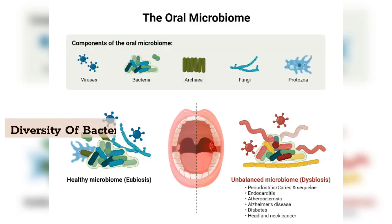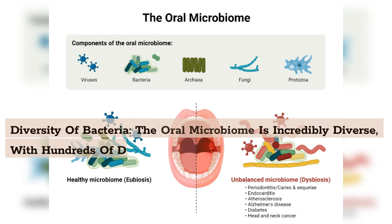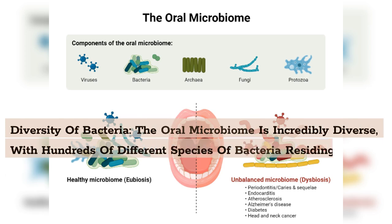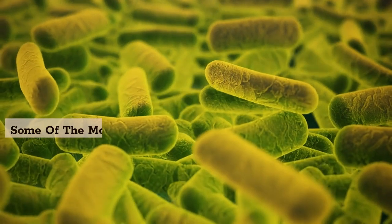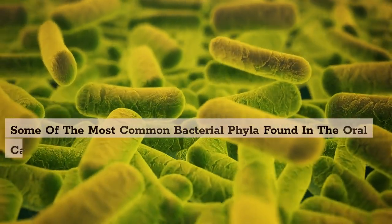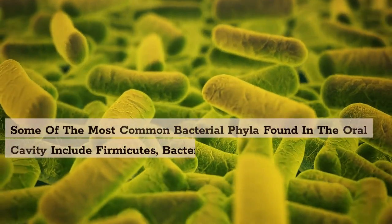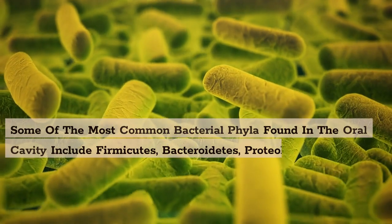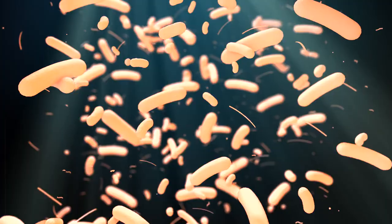The oral microbiome is incredibly diverse, with hundreds of different species of bacteria residing in the mouth. Some of the most common bacterial phyla found in the oral cavity include firmicutes, bacteroidetes, proteobacteria, actinobacteria, and spirochetes.